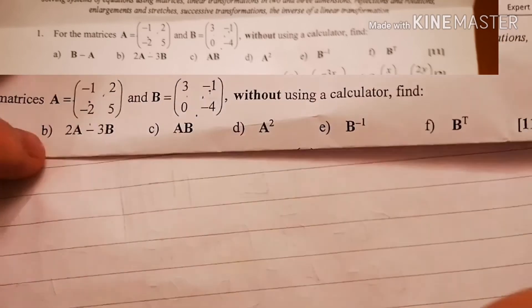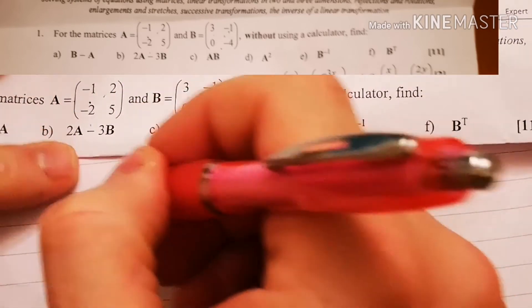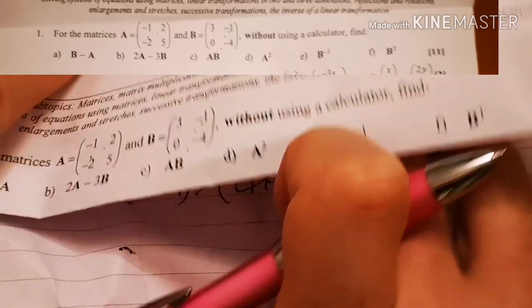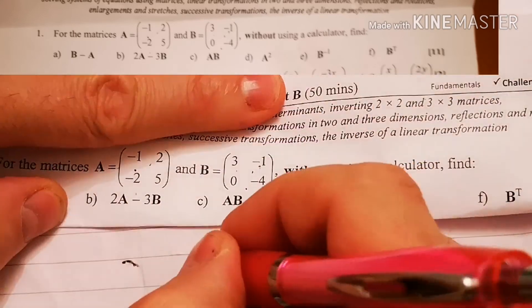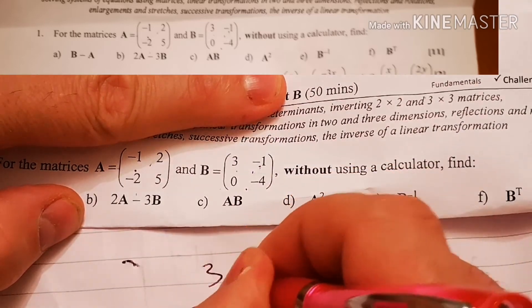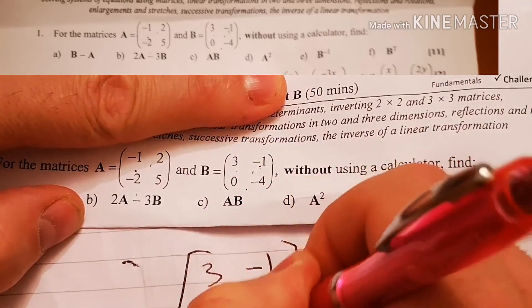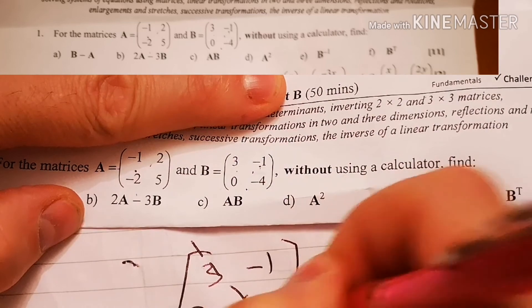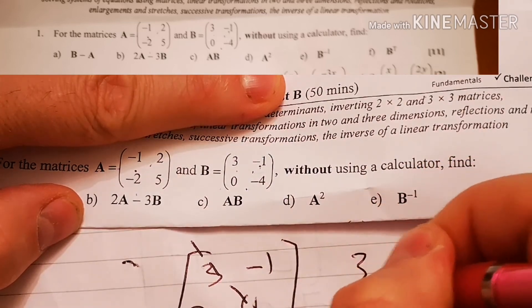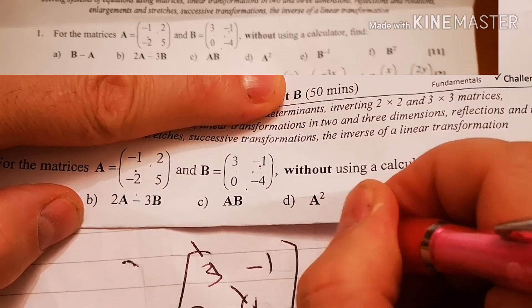And the last one, B to power T, which actually is B transposed. Which is 3, minus 1, 0, minus 4. The easiest way that I try to remember that is that it's sort of like in a reflection of these ones. So my 3 and my minus 4 stays the same. And my minus 1 and my 0 swap.